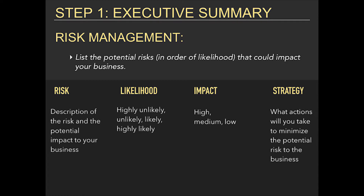Risk management: list the potential risks in order of likelihood that could impact your business. For each risk, describe the risk and its potential impact. Likelihood categories are: highly unlikely, unlikely, likely, or highly likely. Impact is rated high, medium, or low. Strategy: what actions will you take to minimize the potential risk to the business?